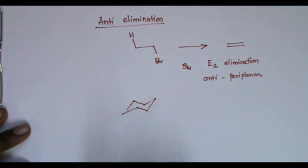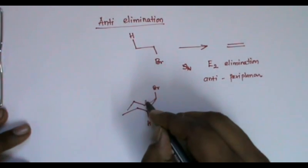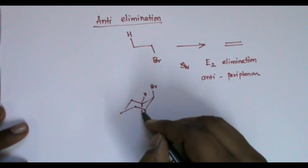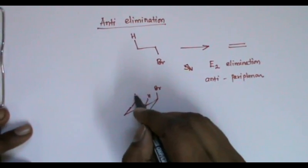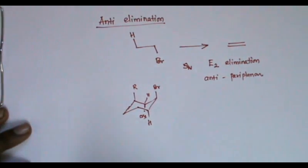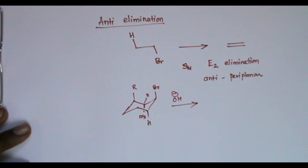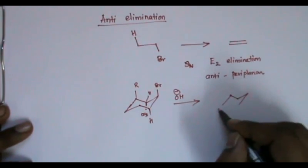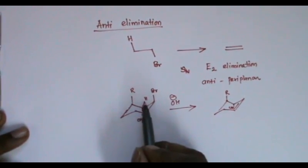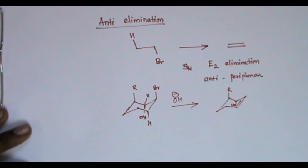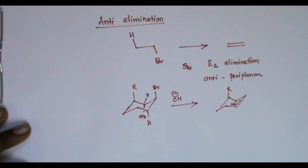This type of question is generally asked for substituted cyclohexane derivatives. For example, consider a compound with Br and hydrogen, with some R group. When treated with a strong base, we get a product. Even though there is a hydrogen available, if the Br and that hydrogen are cis to each other, elimination cannot occur — there must be a trans hydrogen in antiperiplanar arrangement.